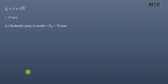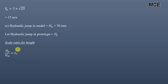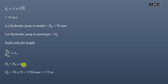Next, the hydraulic jump height in the model is given as 70 mm, and we have to find the hydraulic jump height in the prototype. The scale ratio for height or length is simply Hp/Hm = Lr. So the height in the prototype equals the height in the model times the scale ratio: 70 × 25 = 1750 mm, or 1.75 meters.